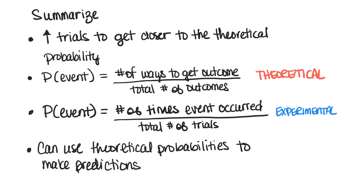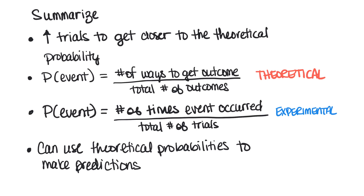To summarize: if we increase the number of trials we get closer to the theoretical probability. To find theoretical probability, take the number of ways to get an outcome and divide by the total number of outcomes. To find experimental probability, take the number of times the event happens divided by the total number of trials in your experiment. Finally, we can use theoretical probabilities to make predictions about how many times you would expect to see something happen.